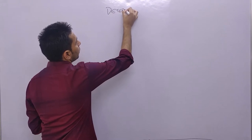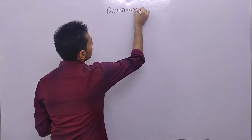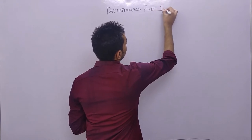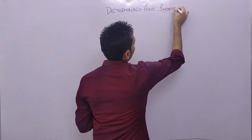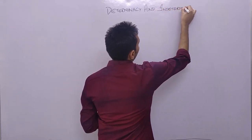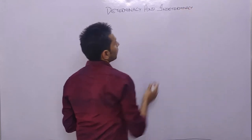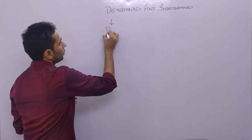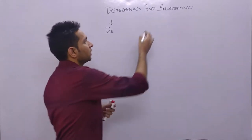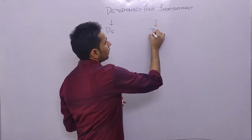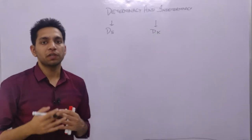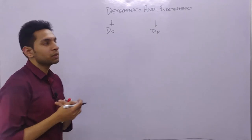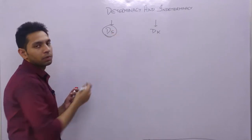Starting with our chapter on determinacy and indeterminacy, we have to address two things: first, finding the degree of static indeterminacy, and second, finding the degree of kinematic indeterminacy. We will start with previous year questions on static indeterminacy.